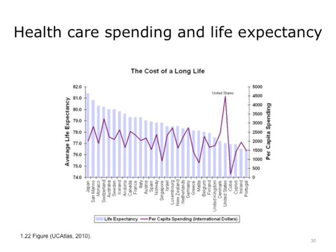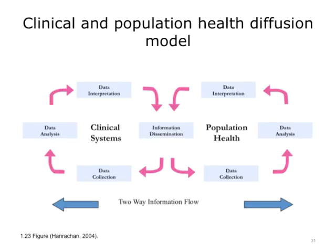A common assumption is that if we throw more money into health care, we're likely to see improvement in health care status. This slide shows the relationship of the United States relative to other countries in the world. The United States currently spends more per capita on health care than any other industrialized country, and yet we see that more spending does not reflect health improvement in the population. The connection between clinical and population health remains an important goal for public health information technology.